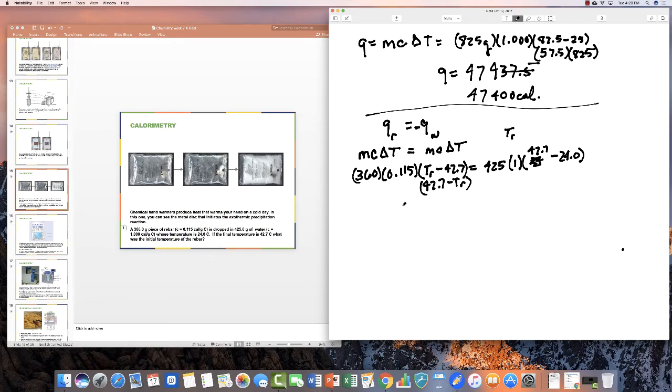And remember, this is a negative sign. So you have 360 times this times this has to equal this side of the equation. So minus 41.4 TR plus 1767.78 has to equal 7947.5. This is a minus sign here.